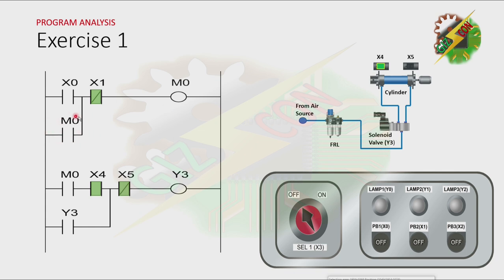M0 will not turn off because there is a latching here. Then the normally open contact of M0 will turn on. And because the cylinder is at fully retracted position, X4 will be energized. This will cause Y3 to turn on. And because there is a latching, Y3 will not turn off. The only way to turn off Y3 is by reaching the fully extended position, X5.